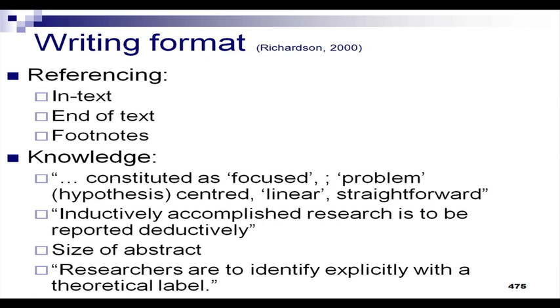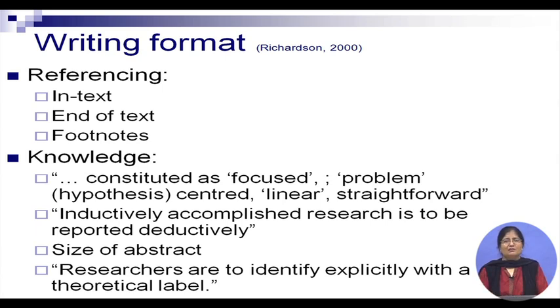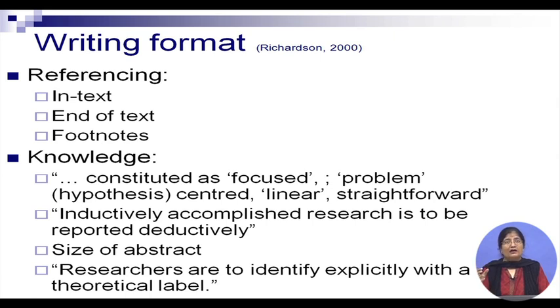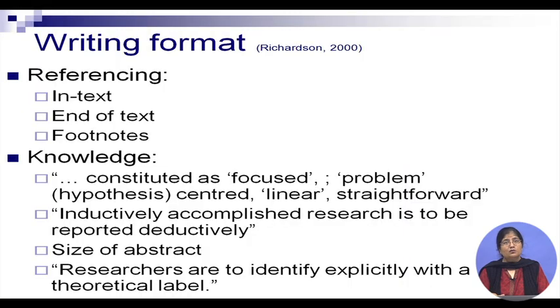Various formats are used in writing: referencing in-text, end of text, and footnotes. When talking about qualitative research, the primary elements of format include how to reference in-text references, end of text references, and footnotes. How are we addressing the knowledge we have created? The knowledge is constituted as focused, problem- or hypothesis-centered, linear or straightforward — that is the most preferred way of presenting new knowledge. It may also be presented as inductively accomplished research to be reported deductively. The size of the abstract will matter, and researchers are able to identify explicitly with the theoretical label.